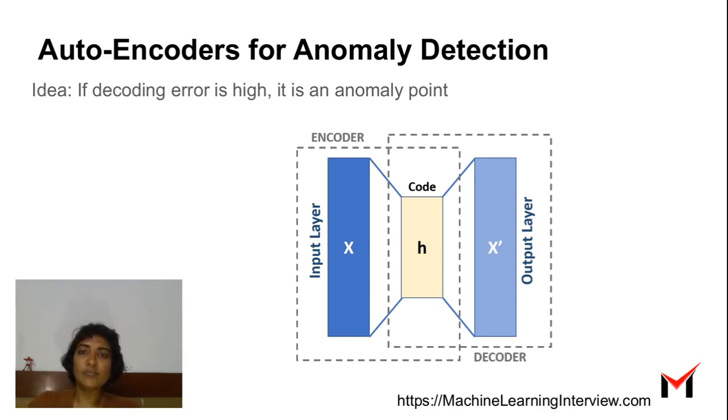But when you give an outlier point or an anomalous point as input, the decoding is not as accurate. When we look at the error of decoding, we can figure out whether it's an anomalous point or a regular point.